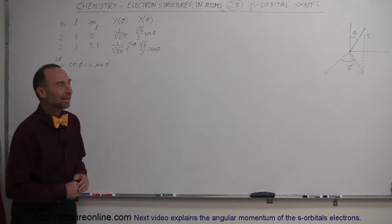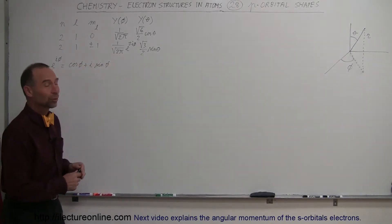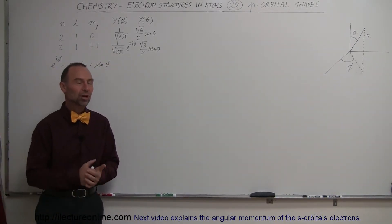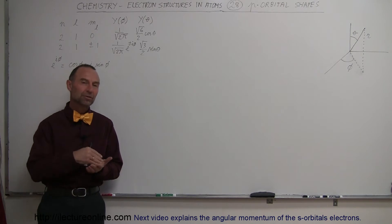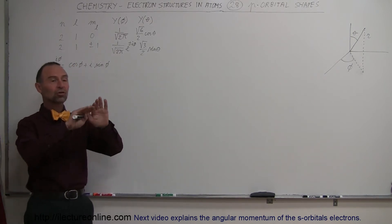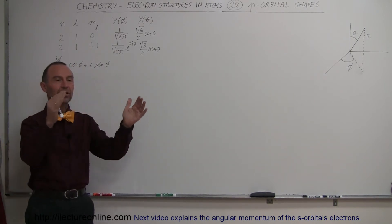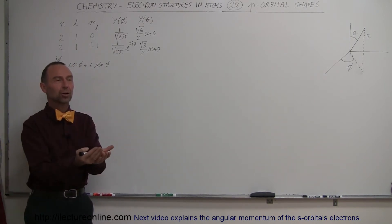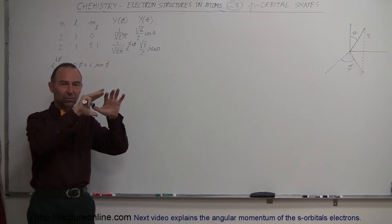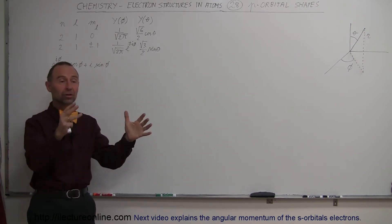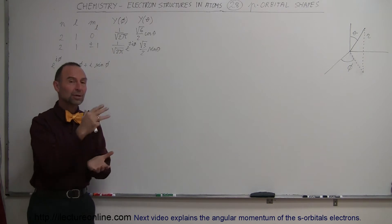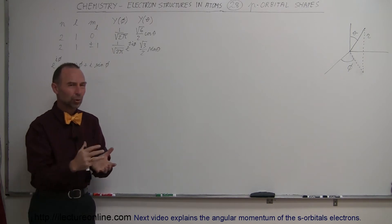Welcome to ElectronLine. In this video we're going to take a look at the p-orbital shapes. In a previous video, we looked at the s-orbital shapes, and those shapes are spherically natured. In other words, the probability of the electron existing somewhere around the nucleus is in a spherical shape when we're dealing with the s-orbitals.